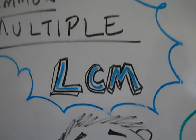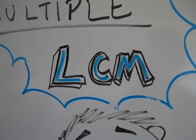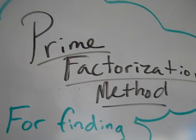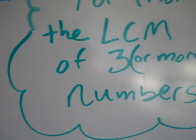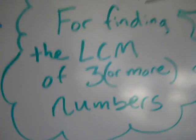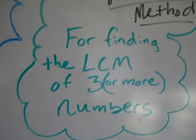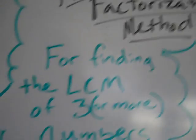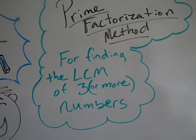For those of you that know about LCM already, the division ladder is really the easiest method, but that only works when you're dealing with two numbers. So we're going to use the prime factorization method for finding the LCM of three or more numbers. This method will always work — it will even work for two numbers — but the division ladder is way easier.